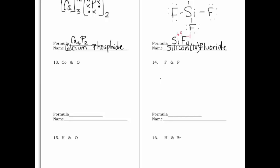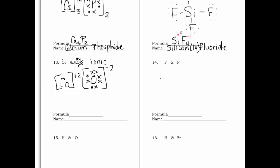Next: cobalt and oxygen. Cobalt is a metal and oxygen is a non-metal, so this is an ionic bond. Cobalt has two valence electrons; oxygen has six. Cobalt loses its valence electrons to become positive; oxygen gains two to reach eight, giving it a −2 charge. Cobalt loses two and oxygen gains two, so no subscripts are needed. The compound is cobalt(II) oxide.